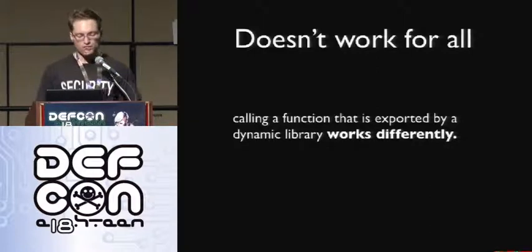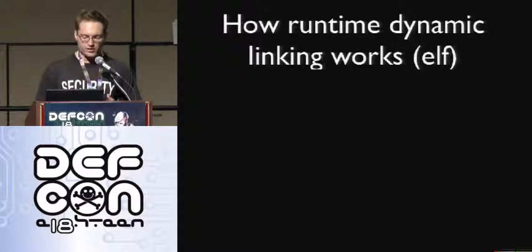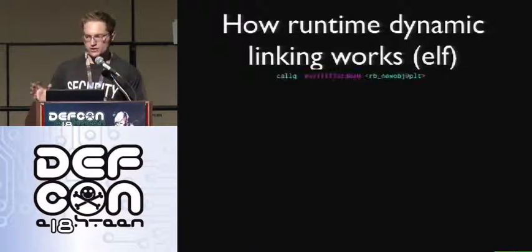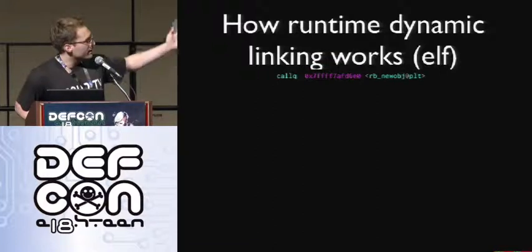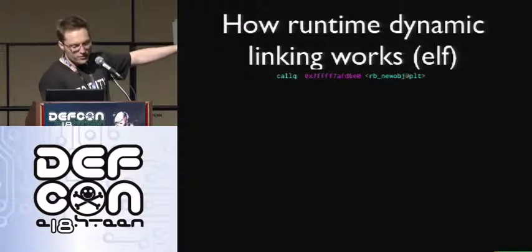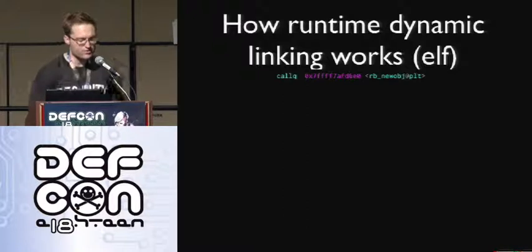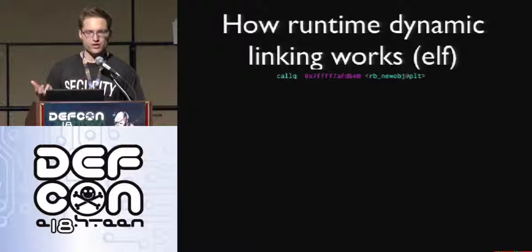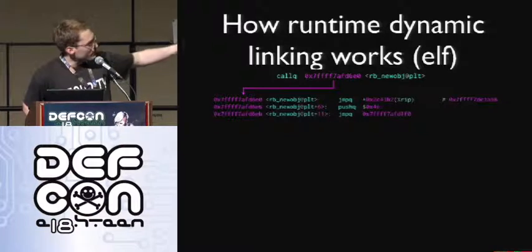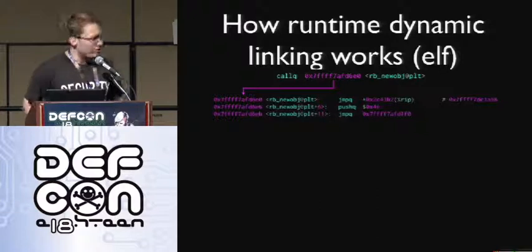That works, but it doesn't work for everything. If you call a function exported by a dynamic library that works slightly differently, so we need to talk about how runtime dynamic linking actually works. I'm going to describe how it works on ELF, but it works almost identically on Mach-O. Here's a call instruction calling a function that's exported. You'll see in objdump it says something like 'rb_new_object@plt' — that '@plt' means you're not calling that function directly; you're calling a dynamic linking stub that will go find it and execute it.